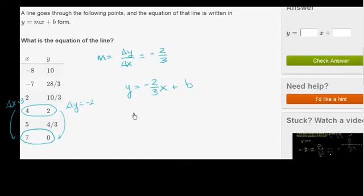So when x is equal to 7, y is equal to 0. So when x is equal to 7, I'll just do the same color, y is equal to 0. So 0 is equal to negative 2 thirds times 7 plus b. Or 0 is equal to negative 14 over 3 plus b. Add 14 over 3 to both sides. You get 14 over 3 is equal to b.